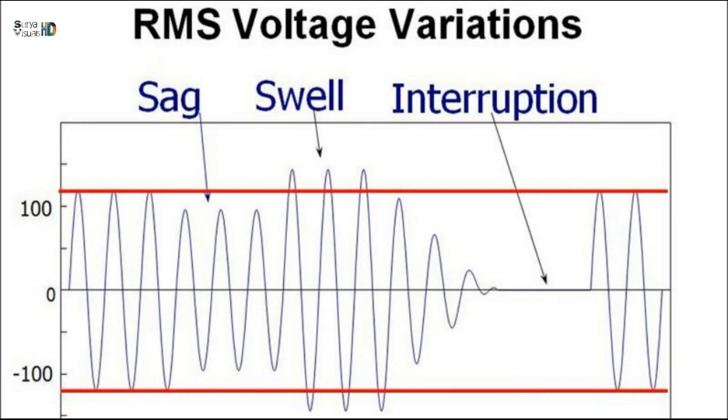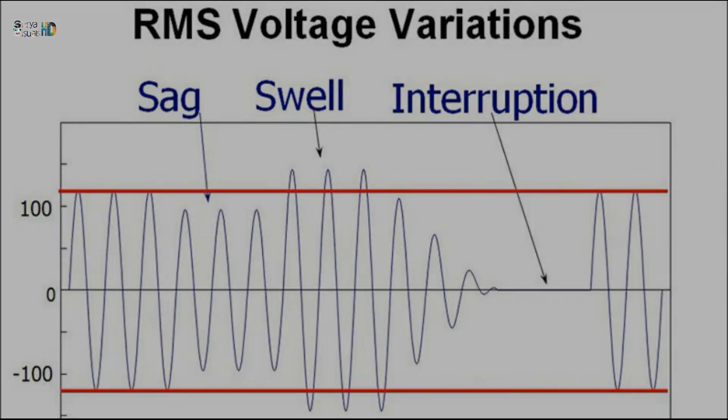A voltage sag is a short duration, typically 0.5 to 30 cycles, reduction in RMS voltage caused by faults on the power system and the starting of large loads such as motors.